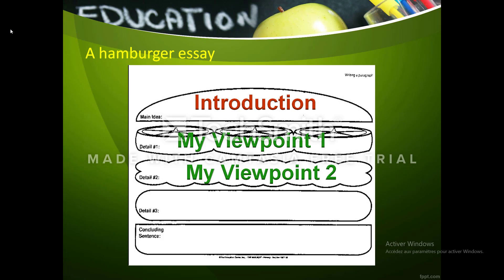Support your arguments and your details with at least three reasons, otherwise you may have a weak argument. Then comes the opposing viewpoint or the counter argument. You want the reader to know that you've considered both sides and haven't neglected the other side.